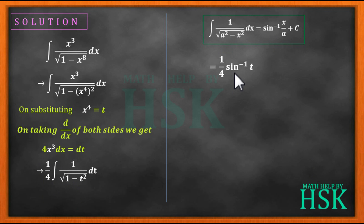times the sin inverse of t. But t here was x to the power of 4, so this will be equal to 1 by 4 times sin inverse of x to the power of 4 plus c. So this will be my required answer.